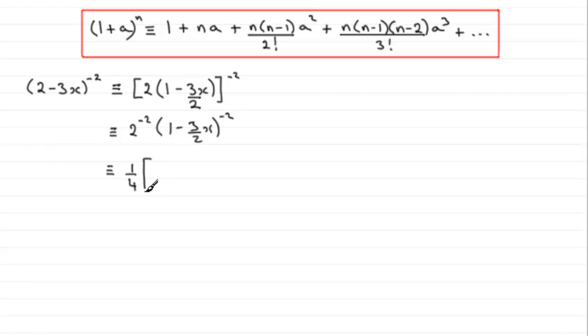So if we put this in square brackets according to the formula, then we've got 1 plus n times a, plus n times n minus 1, so it will be minus 2 multiplied by minus 3 if we take one away from the minus 2 there. It's all over 2 factorial. 2 factorial remember is 2 times 1. I'm just going to write it in as 2 times 1. And then we've got a squared, so that's going to be minus 3x over 2 all squared.